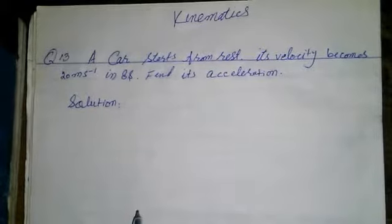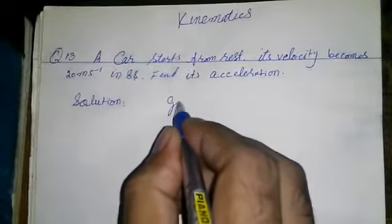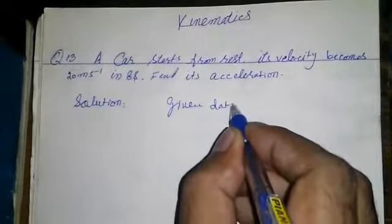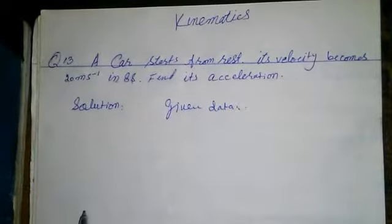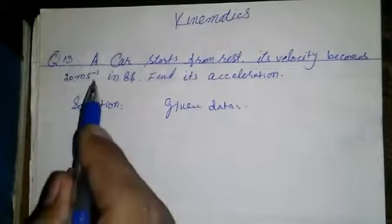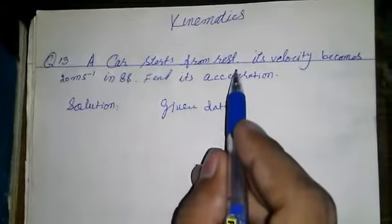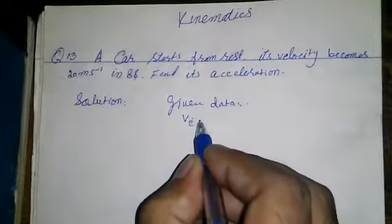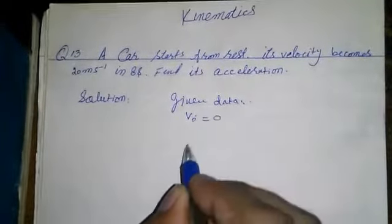First of all, we write the given data. When something starts from rest, its initial velocity will be 0. So initial velocity Vi is equal to 0.